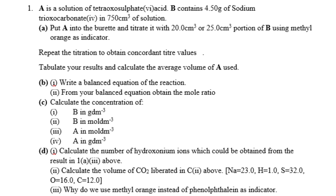D option, Roman figure 1: Calculate the number of hydronium ions which could be obtained from the result in A1 theory above. Roman figure 2: Calculate the volume of CO₂ liberated in C2 above. Roman figure 3D: Why do we use methyl orange instead of phenolphthalein as indicator? This is the question that is likely to come out for this year's NECO. Now let's go through it one after the other and solve it.